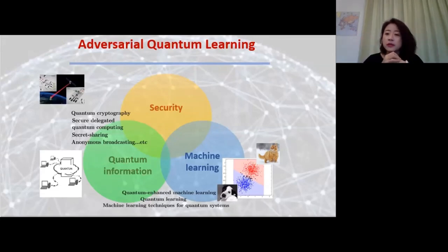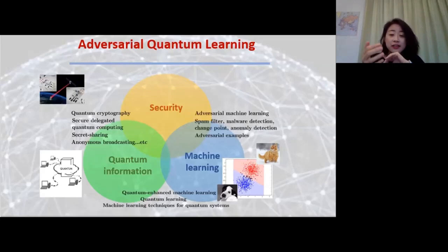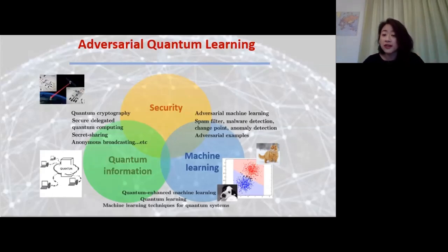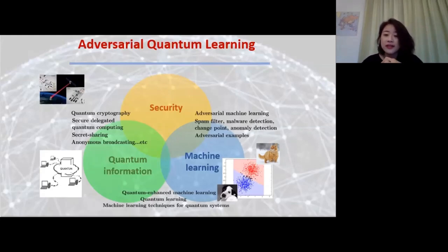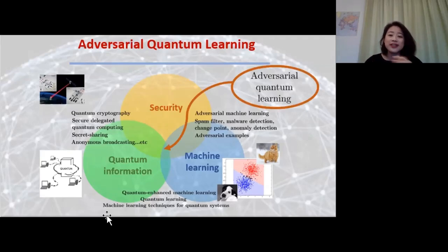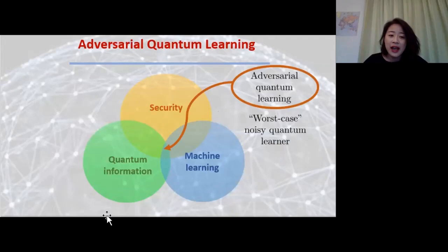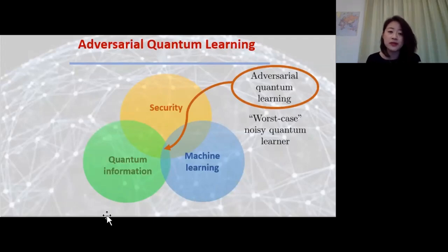There's also a very large overlap between security and machine learning problems—an extremely vibrant field that focuses either on using machine learning to enhance security, or on security vulnerabilities of machine learning algorithms themselves. Problems like adversarial examples fall under the umbrella of adversarial machine learning. We can really consider the adversarial case as a worst-case noisy scenario: so long as you're in a scenario where you have no access to your noise models, the adversarial bounds provide the worst-case bound.